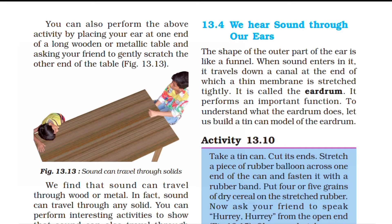We left this topic in the last part. Here we will see how we can hear sound through our ears. The shape of the outer ear is like a funnel. When sound enters it, it travels through the canal, at the end of which a thin membrane is stretched tightly.